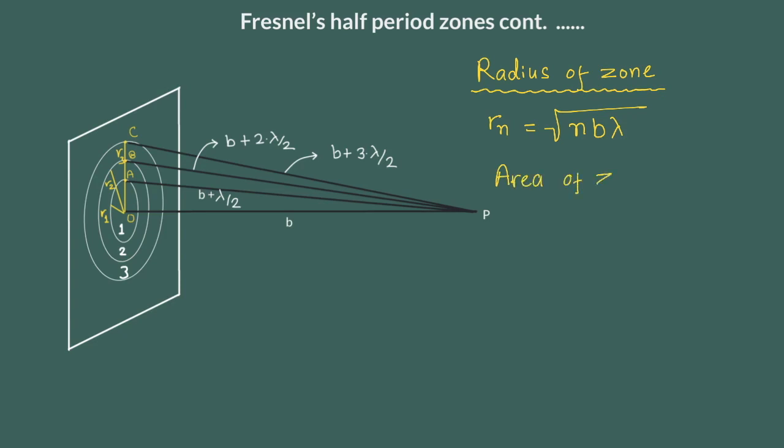And area of the zone which is approximately equal for all the zones can be given as pi b lambda. So it is dependent on two quantities: one the distance of observation b and second wavelength of light.